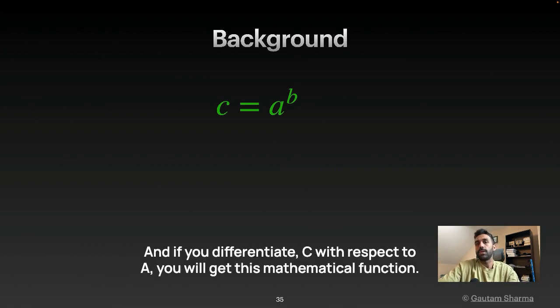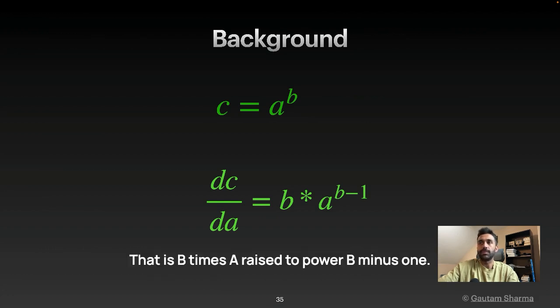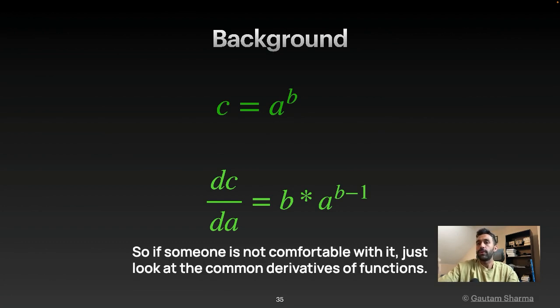So C can be written down as A raised to power B. And if you differentiate C with respect to A, you will get this mathematical function. That is B times A raised to power B minus 1. Now this all comes from calculus. So if someone is not comfortable with it, just look at the common derivatives of functions.